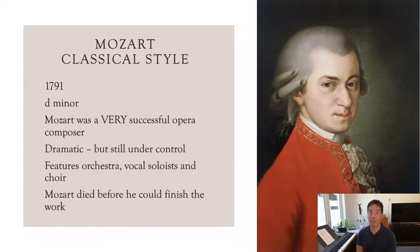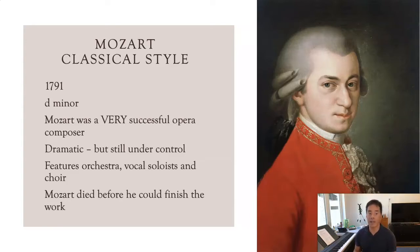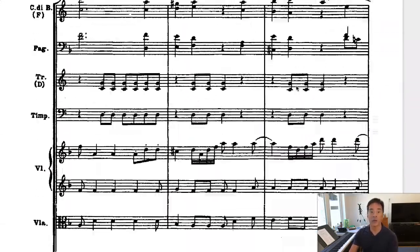Mozart's commission for this came from a mysterious person who actually commissioned it for his wife, and Mozart didn't finish it. It was written around 1791, and after Mozart passed away himself, he actually saw this as a foreboding when he was writing it. His wife Constanze had it finished by some other composers, so there is some confusion about what parts Mozart actually wrote, and the Dies Irae section may not be all of Mozart. You'll notice that the drama is still in the classical style — it's somewhat under control.